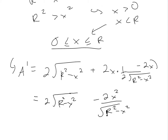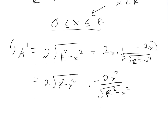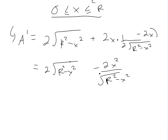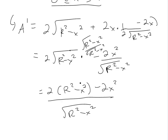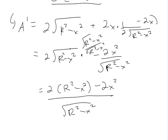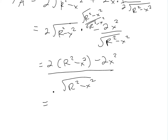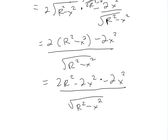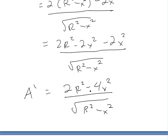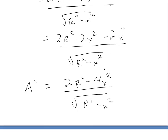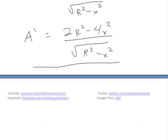Simplifying, this equals 2√(r² − x²) minus 2x²/√(r² − x²). Using a common denominator — multiplying top and bottom of the first term by √(r² − x²) — we get [2(r² − x²) − 2x²] / √(r² − x²). Expanding and subtracting like terms gives us 2r² − 4x² in the numerator.